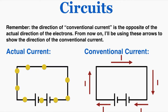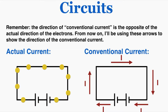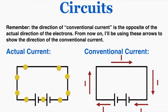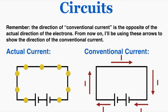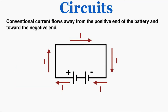Remember that the direction of conventional current is opposite to the actual direction of the electrons. From now on I'm going to use arrows to show the direction of the conventional current. So even though the electrons are moving counterclockwise, the conventional current points in the direction that imaginary positive charges would move — opposite to the real flow of electrons. Conventional current flows away from the positive end of the battery and toward the negative end. The larger side of the battery symbol is positive and the smaller side is negative. The electrons are actually attracted to the positive end and repelled from the negative end, so they travel the other way around the circuit.